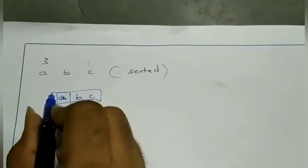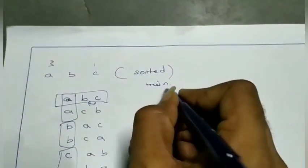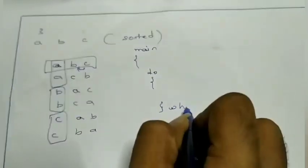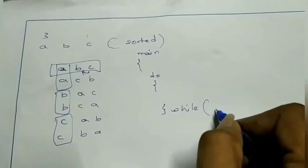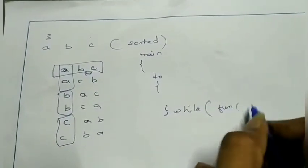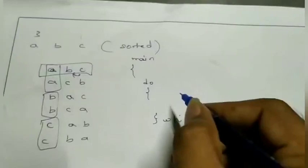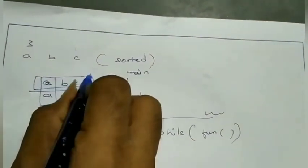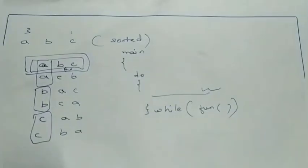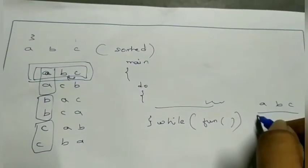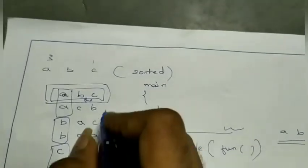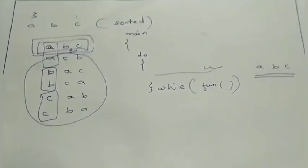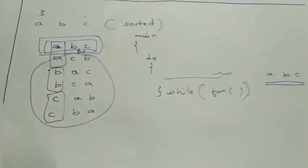In the main function, they have written a do-while loop. In this loop they are passing the function, iterating again, and printing accordingly. The first time it will print the input as-is. Then we have to find all the combinations below it using the next permutation function.